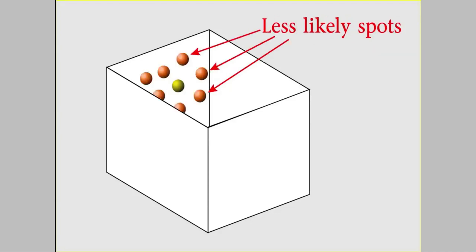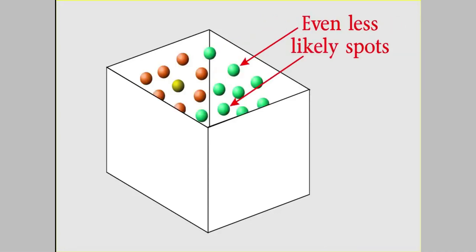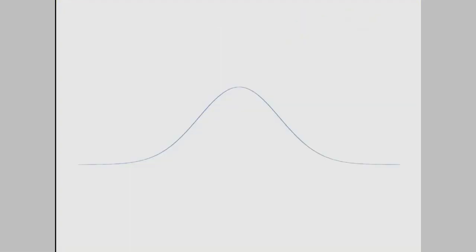And the further away from the spot you get, the less likely it is you'll find the particle. So in that case, you might imagine that the odds of finding the particle tail off the further away you get from the spot. So the probability might look something like this, a bell-shaped curve.